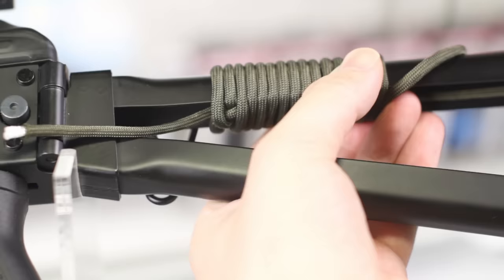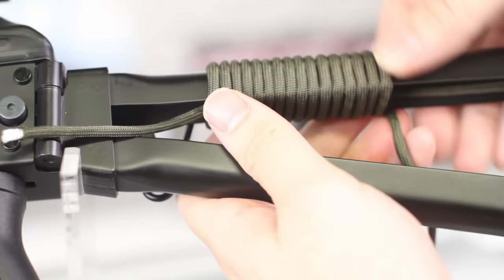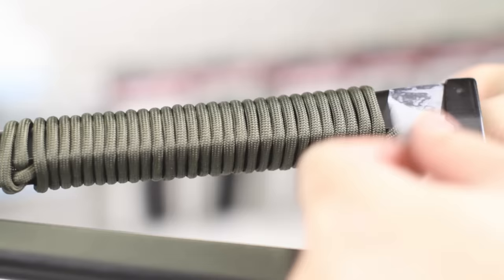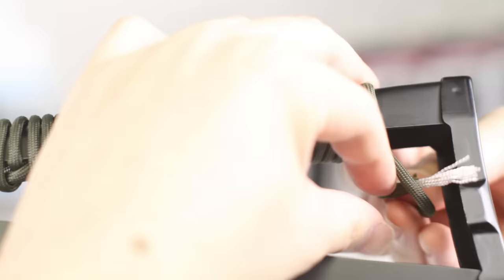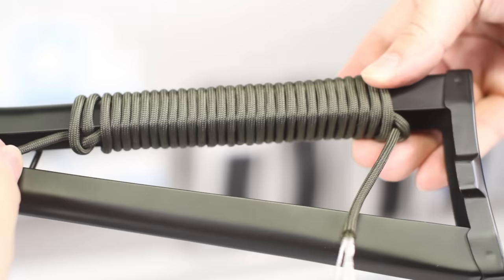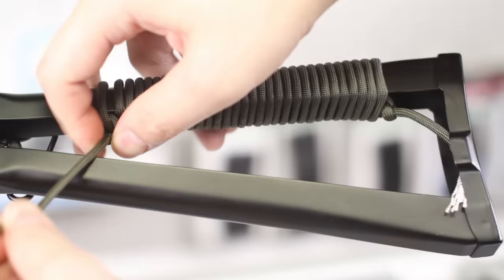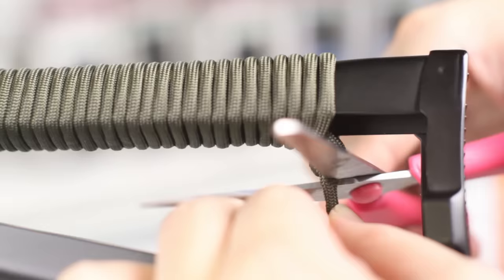As you're doing the wrap, try to keep the tension constant and the wraps close together. Periodically squeeze them together to keep things nice and tight. When you get to the end, simply tuck the end into the loop that you made earlier, and then pull the short end through the wrap, closing it all up. Tie a knot at each end, trim off the excess, and then seal it all with a lighter.